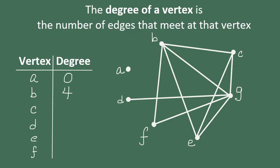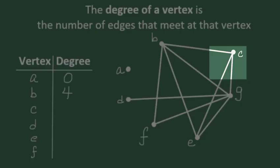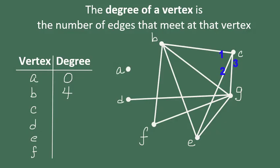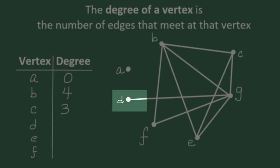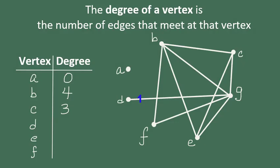How about vertex C? Vertex C is the location where three different edges meet, so it has degree 3. Vertex D only touches one edge, so D has degree 1.